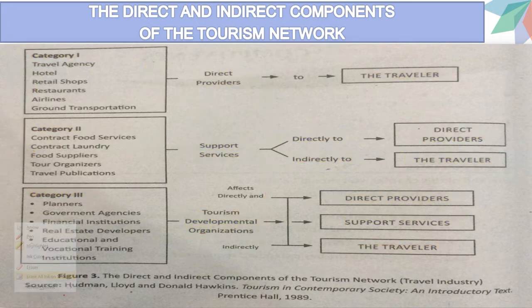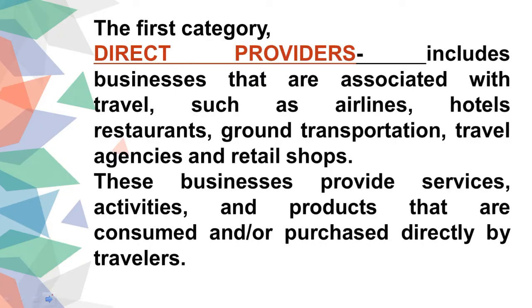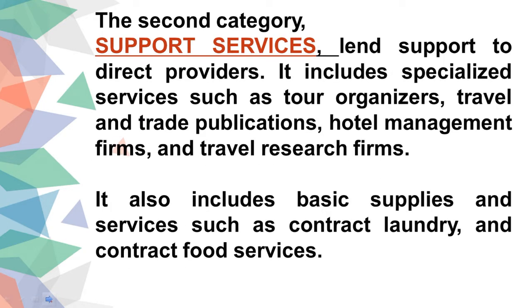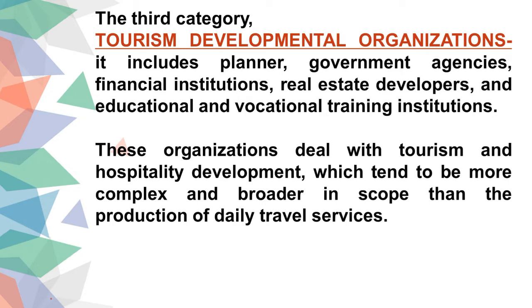So those are the three categories of the direct and indirect components of the Tourism Network. Category 1 is the direct providers — visible to travelers. Category 2 is support services — it lends support to direct providers. Category 3 is the Tourism Developmental Organization — it deals with tourism and hospitality development, assisting both the direct providers and support services.